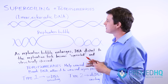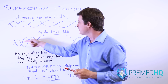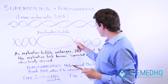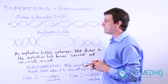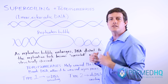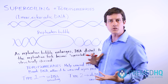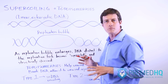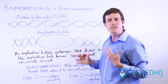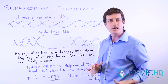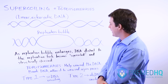Supercoiling is something that occurs distal to these replication forks, and it can create stresses that cause problems during the replication process and make it more difficult for some of the enzymes to reach their positions.